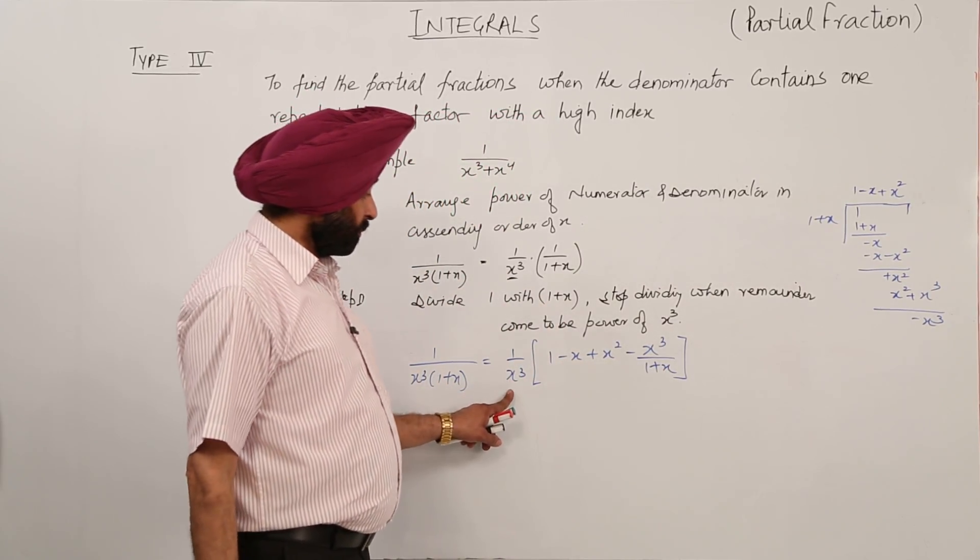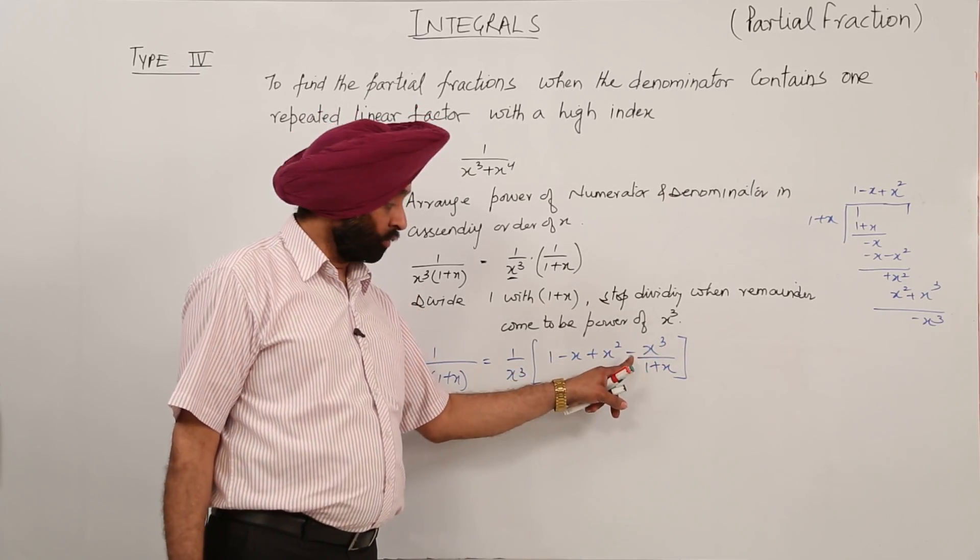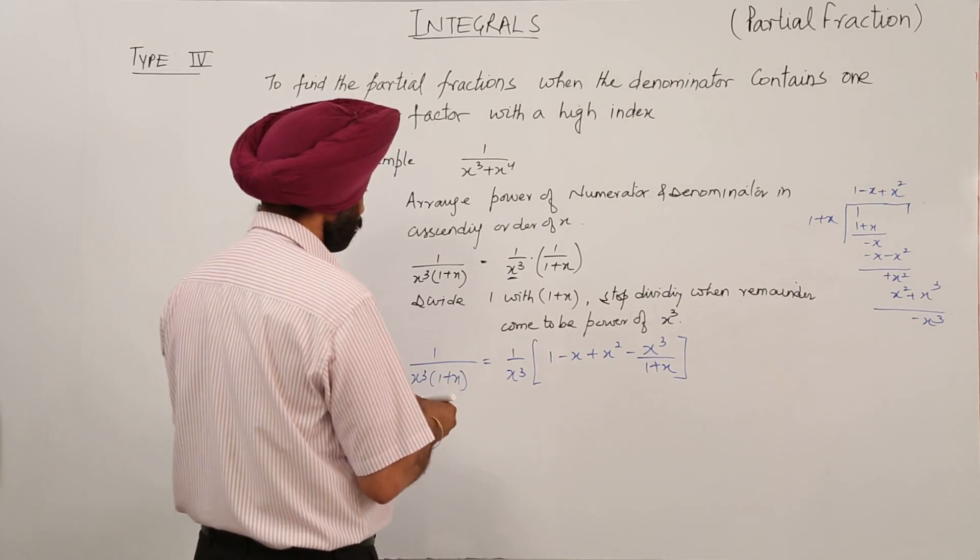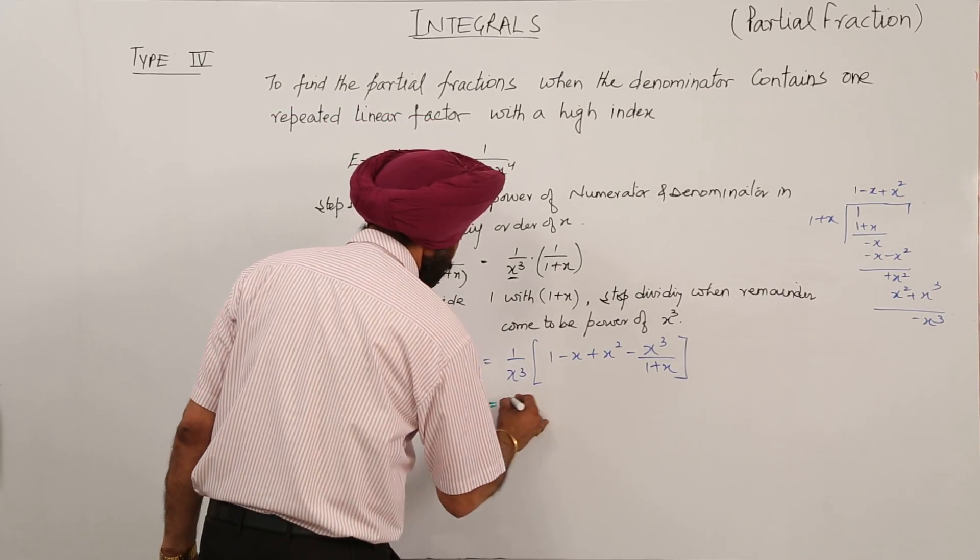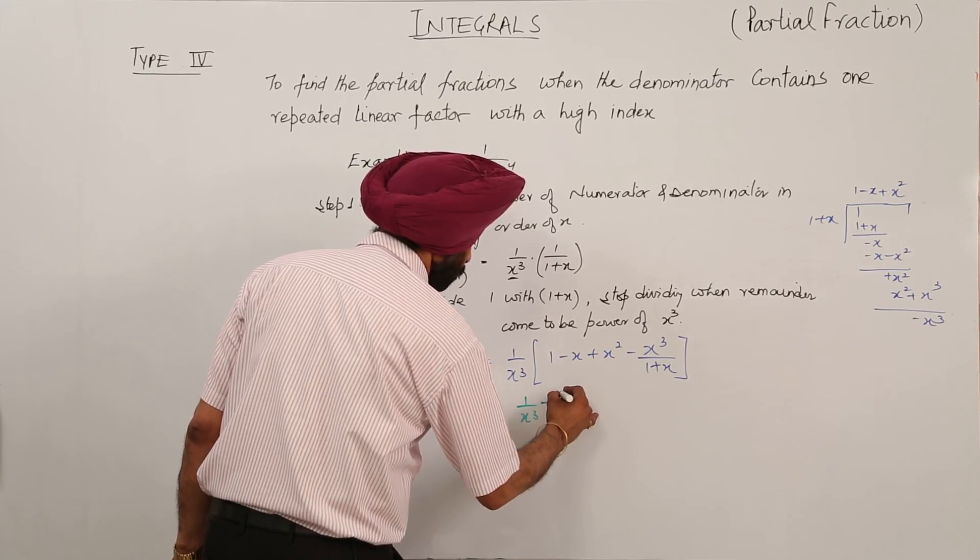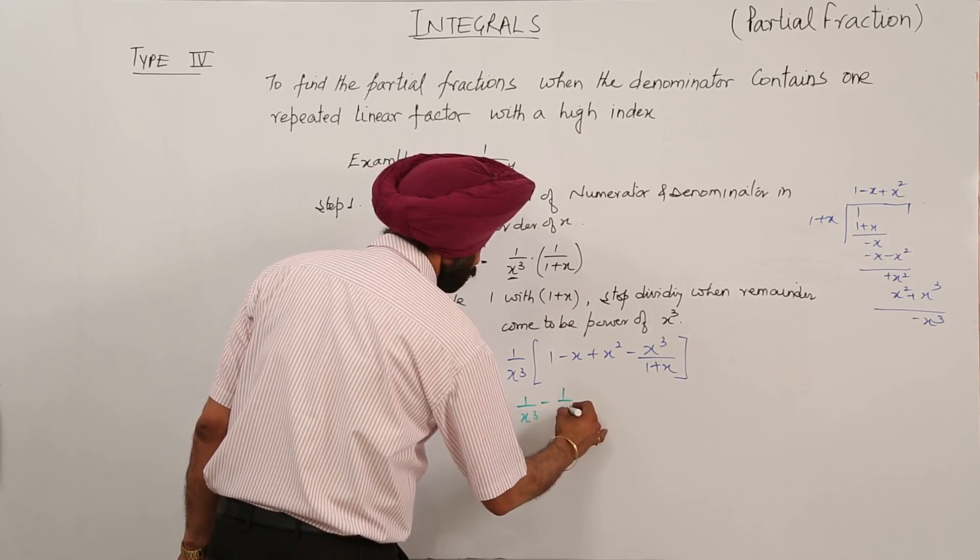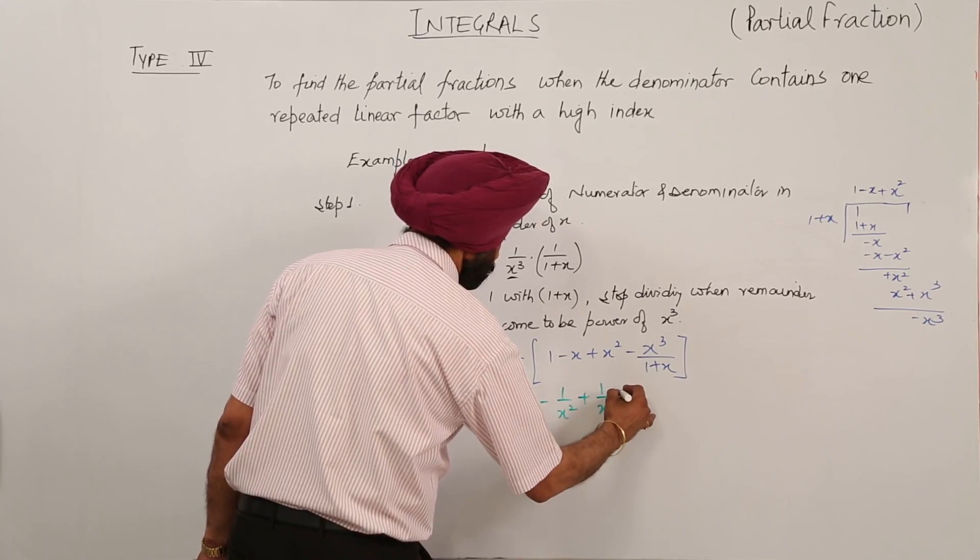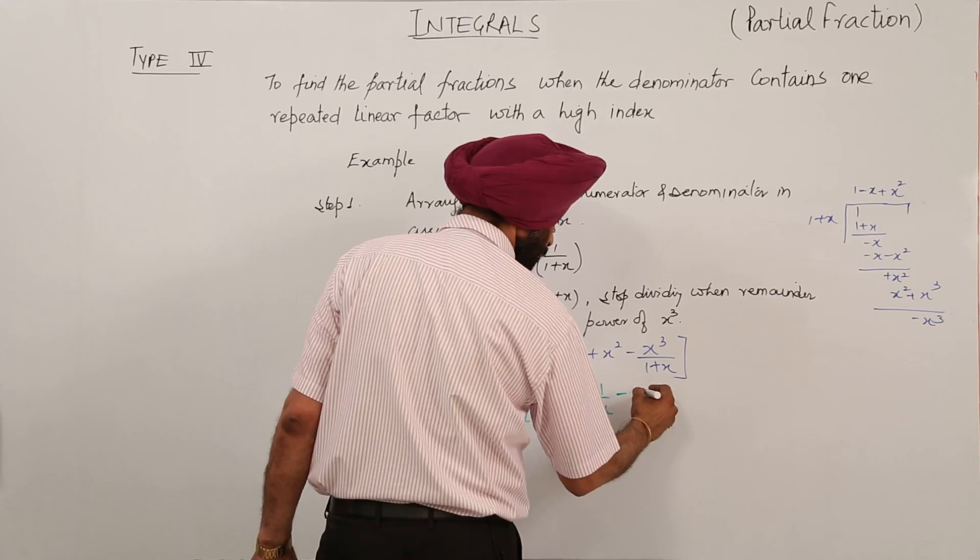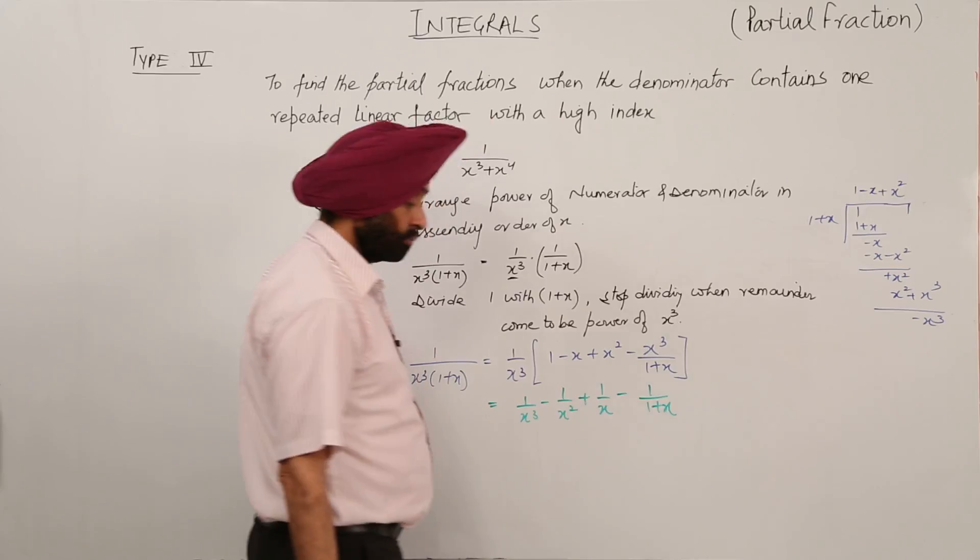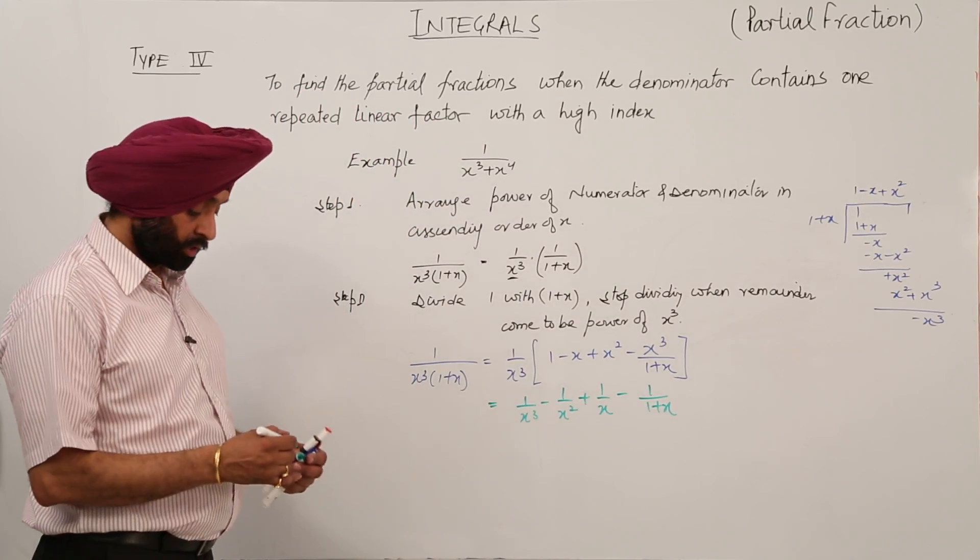This value and this value should be the same, no need to worry about the sign. Now what we are having? If we are solving this part, we are having 1 upon x cube minus 1 upon x square plus 1 upon x minus 1 upon 1 plus x. Is it clear?